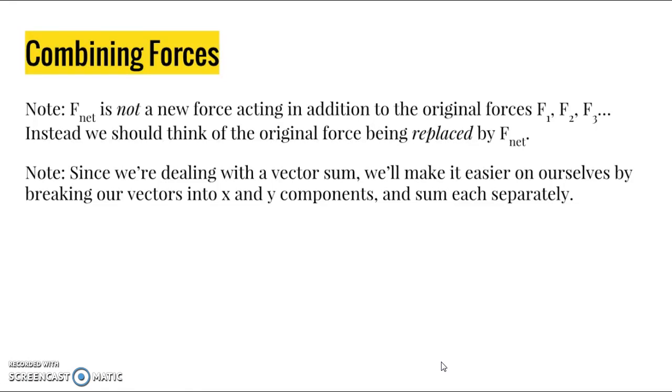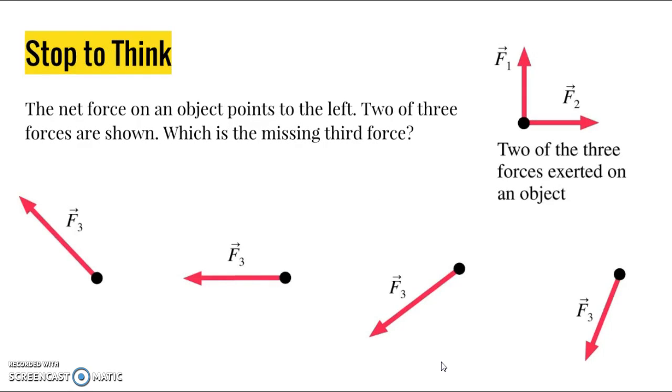An important thing to note is that this net force is not a new force that's acting in addition to those forces. Instead, we should think of it as the original forces being replaced by this net force. It's not another force in addition to these others, it's a new force instead of those forces. Because we're dealing with the vector sum, we're going to make it easier for ourselves by breaking our vectors down into x and y components and sum each separately, kind of like we did in kinematics. We dealt with the horizontal direction and the vertical direction. We're going to do the same thing here. It's going to make the math simpler and easier to solve.